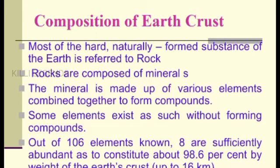Now, the most important topic is the composition of the earth crust. The upper natural rock layer — all rocks are composed of mineral particles, and minerals form the soil. In the earth crust, out of 106 known elements, only 8 are abundant and together they occupy 98.6% of the earth crust.